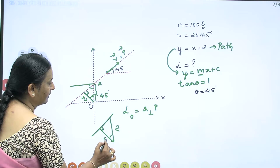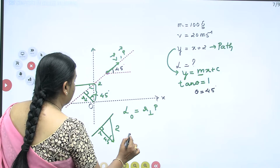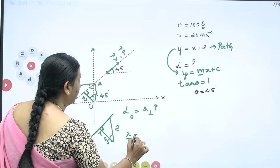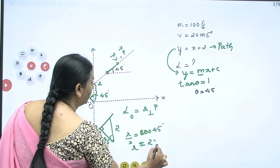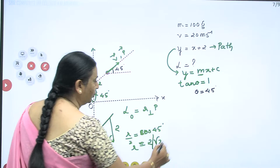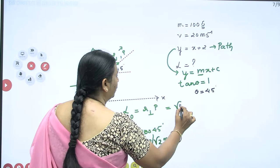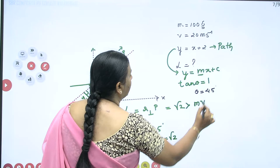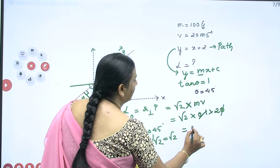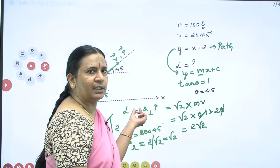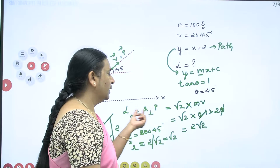The y-intercept distance is 2, and I need to find this perpendicular distance. With the angle being 45 degrees: R_perpendicular / 2 = cos 45 = 1/√2, so R_perpendicular = 2/√2 = √2 meters. Therefore L = √2 × M × V = √2 × 0.1 × 20 = 2√2 kg·m²/s.